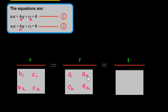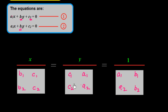We take the term on the right side first, then the remaining terms. Under the constant term, we write the coefficient terms: b1 and b2 on the left side, and then a1 and a2. So we write a1, a2, and after that b1 and b2. Once we have written this down, we have to cross multiply — that is why it is called the cross multiplication method.